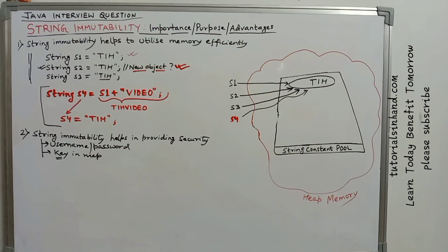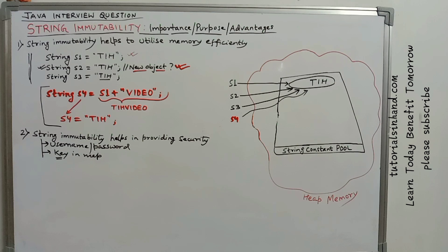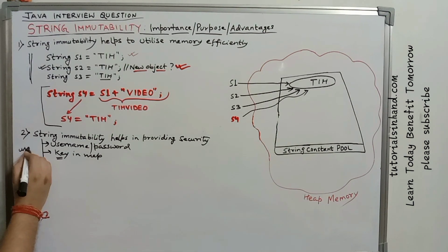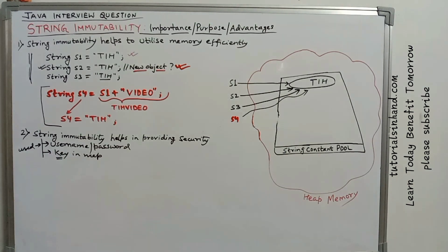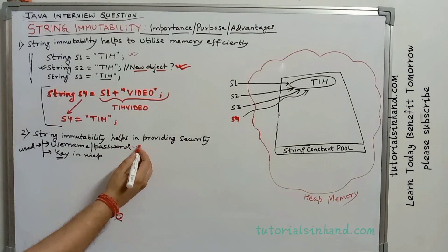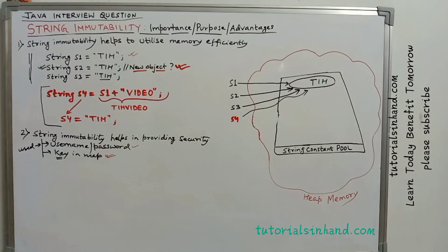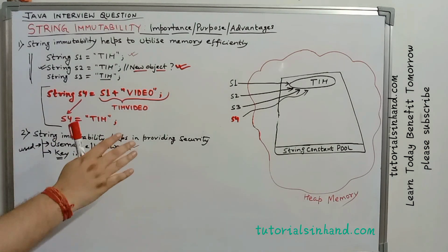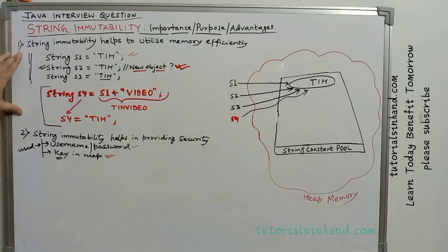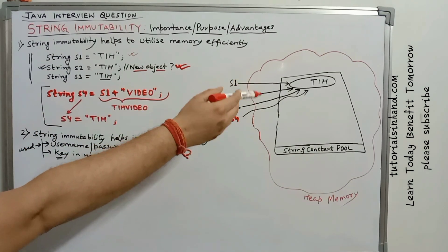Let's check the second point about how string immutability is important. String immutability helps in providing and enhancing the security of the application. We generally know that string is used to store the values of username, password, or key in a map, and these are important things which should not change — otherwise the application will not be able to log in correctly, or if the key is changed the correct value will not be fetched from the map. We will check the same example with references s1 to s4 all referring to the same object 'tih'.